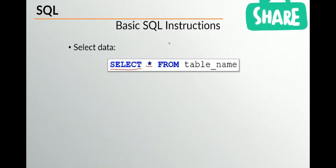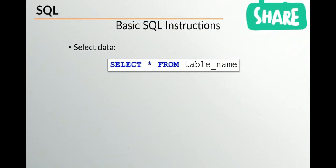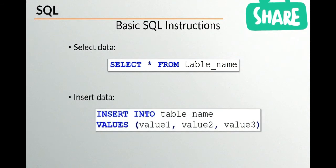Following the asterisk is the FROM keyword, which says 'I want it to come from this particular table.' So the full statement means: 'I want all the information from this table.' Of course, this is just a placeholder name — you put the name of your actual table in a real-life scenario.